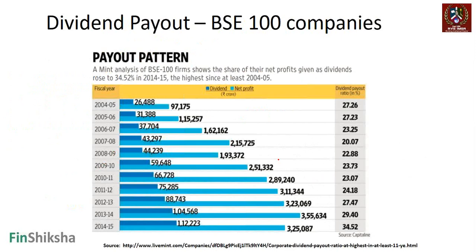Looking at BSE 100 companies over the last 10 years, net profits have gone up considerably and so have dividend payments. Interestingly, the payout ratio has also increased over this period. Even in years where profits fell temporarily, companies continued increasing dividends, confirming that they dislike cutting dividends and treat profit dips as temporary. The average total payout ratio is about 34.52% and average dividend yield is approximately 1.47%.